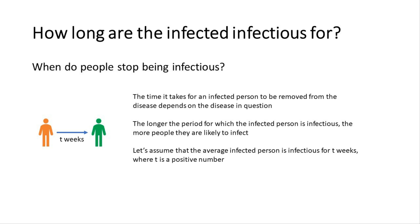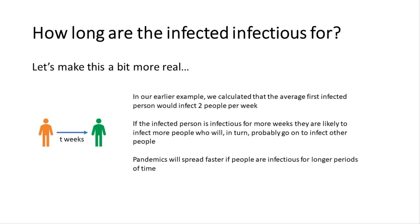Why do we care how long someone is infectious for? Because the longer someone is infectious, the more people they're likely to infect. In our earlier example, the average first infected person infects two people per week. If they're infectious for more weeks, they'll infect more people, who in turn will infect more and more others. Pandemics spread faster if people are infectious for longer periods of time.